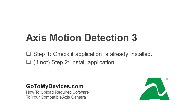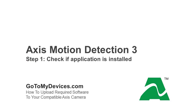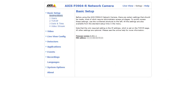This section of the video will show you how to check if Access Motion Detection version 3.2 is installed on your camera, and, if needed, install the application. Once your compatible Access camera is running the latest firmware version, check to see if Access Motion Detection version 3 is already installed.